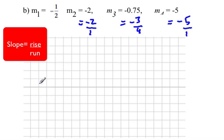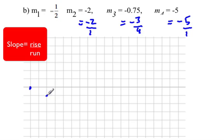We'll put points — we can put them anywhere. Starting with one point, we draw a line with slope negative one-half, which means a rise of negative one — go down one and over two. Remember that lines with negative slope go down to the right. For the second line, we put a point and draw a line with slope negative two, which is a rise of negative two and a run of positive one.